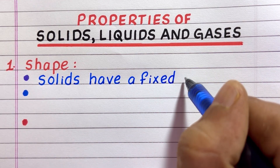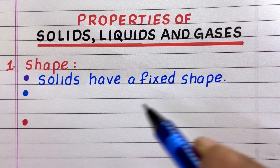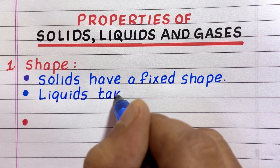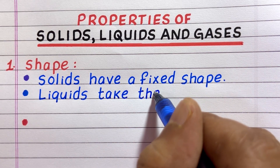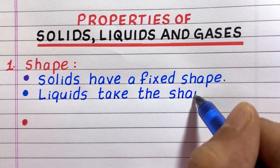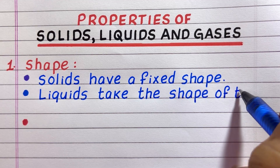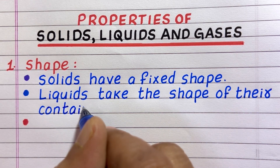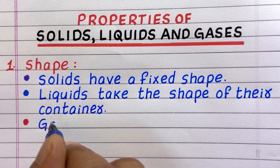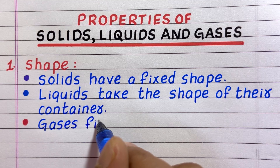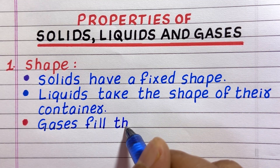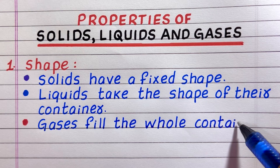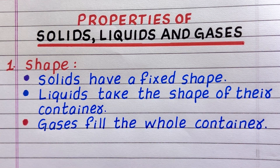First property: shape. Solids have a fixed shape. Liquids take the shape of their container. Gases fill the whole container.